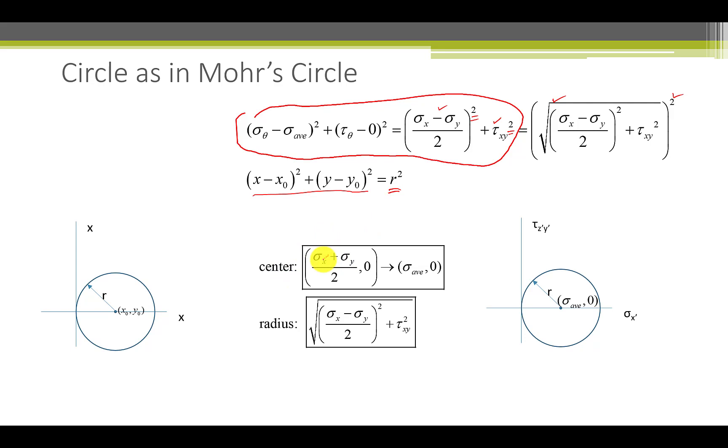So we have the center at sigma x plus sigma y over 2, 0, and that means the Mohr's circle is not anywhere. It's not up here or down here. It has to be on this x-axis, and that is meaning that the shear stress, the maximum positive and the maximum negative shear stresses are equal in magnitude to one another.